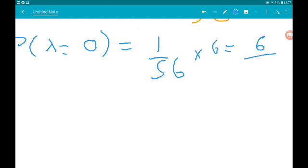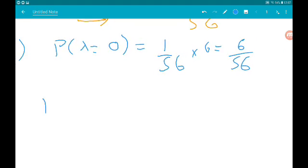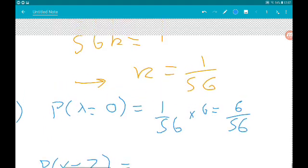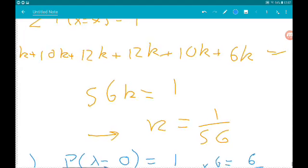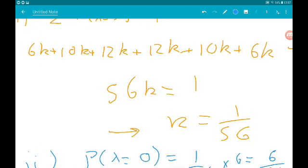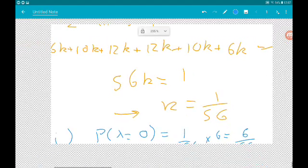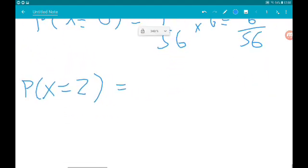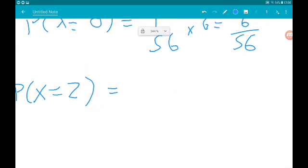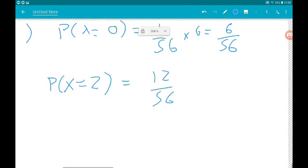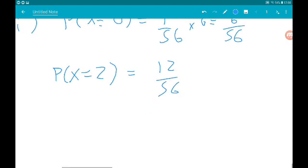And we also need the probability x is equal to 2. Now we know that that was 12k, so that's 12 times 1 over 56 is 12/56.